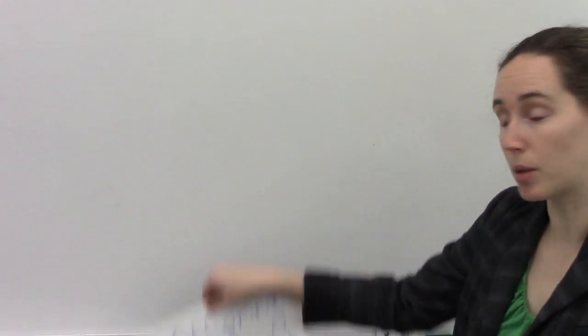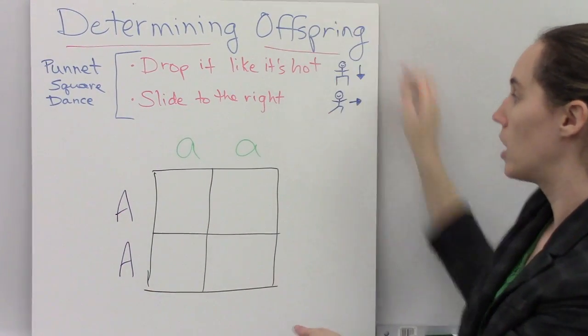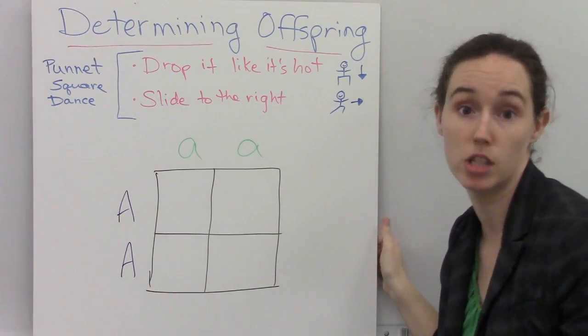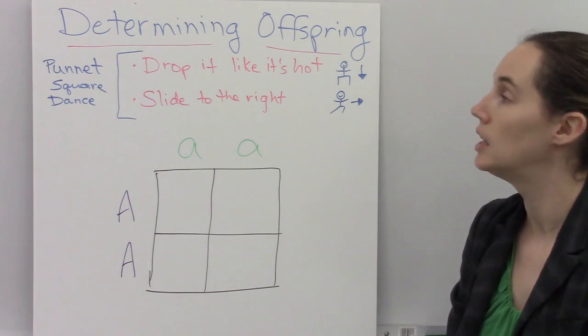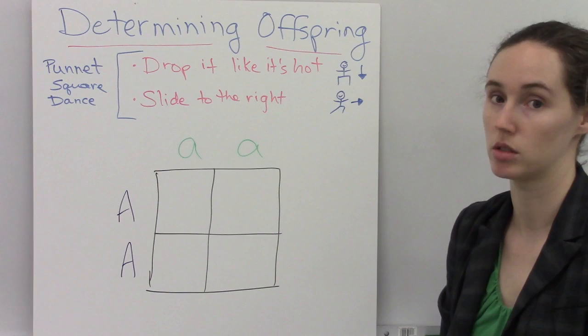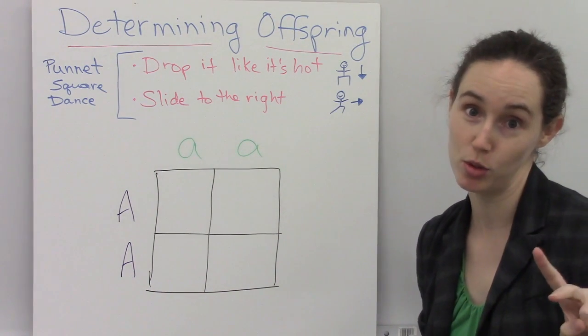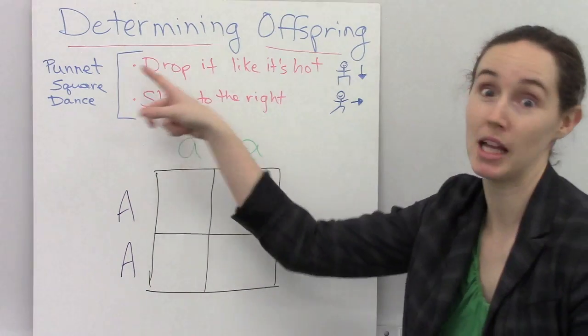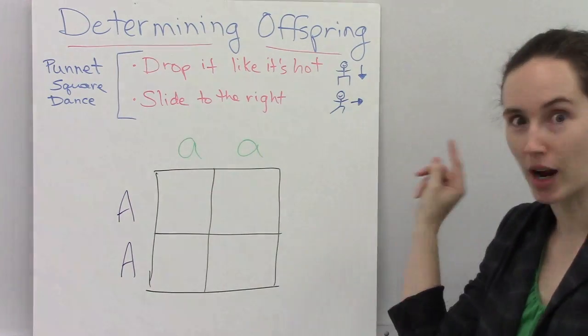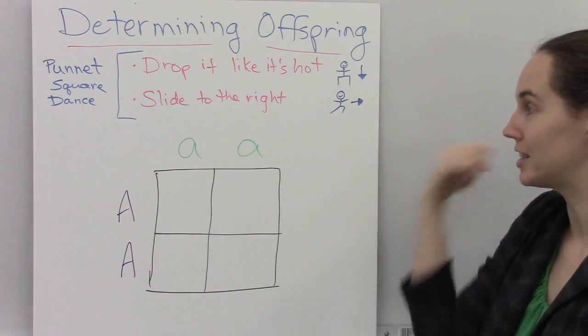Now that we have the parents figured out and our Punnett square set up, we can fill it in to determine the genotypes and phenotypes of the offspring. Now I have a simple way to remember how to work Punnett squares, and I like to think of it as the Punnett square dance, which has two steps: drop it like it's hot and slide to the right. This is my little guy dropping it, and this one sliding it to the right.